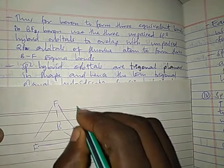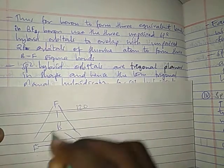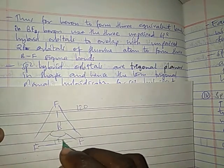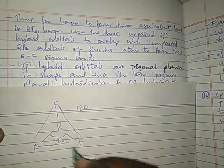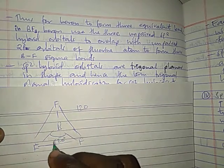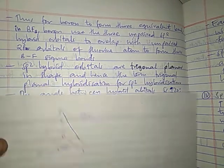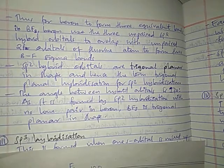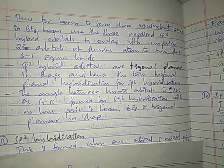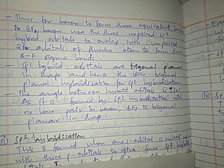In sp2 hybridization, mixing one s and two p orbitals gives three sp2 hybridized orbitals. One p orbital remains unhybridized. The shape of the molecule in sp2 hybridization is trigonal planar, and the bond angle is 120 degrees.